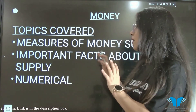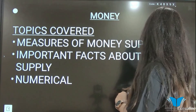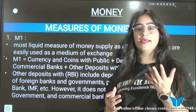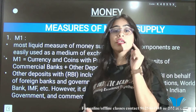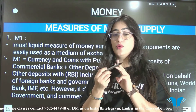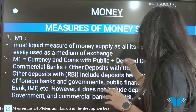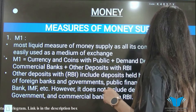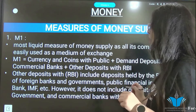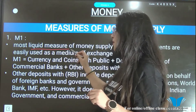Let's start with the first topic: measurement of money supply. How do we measure money supply? In this we will see four measurements — M1, M2, M3, and M4. M1 is the most liquid measure of money supply.